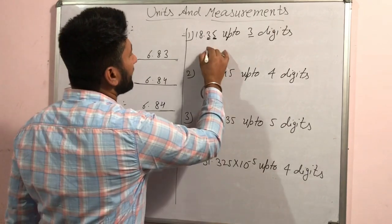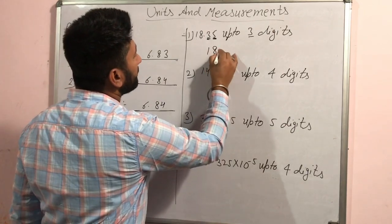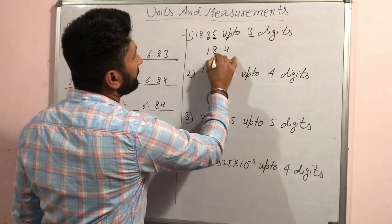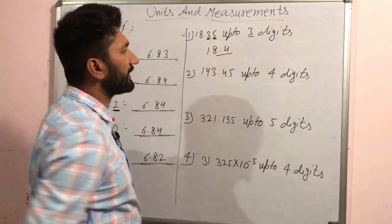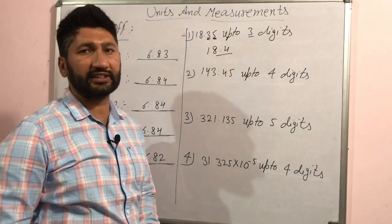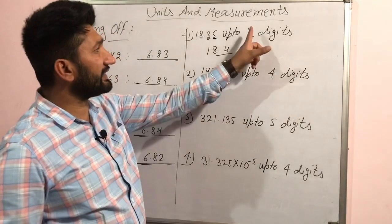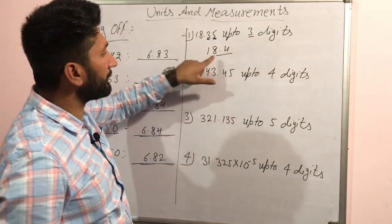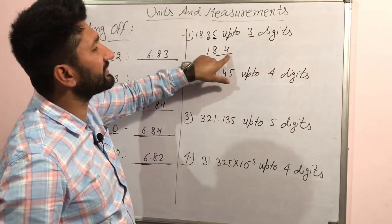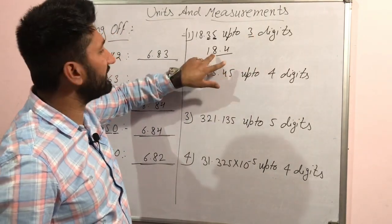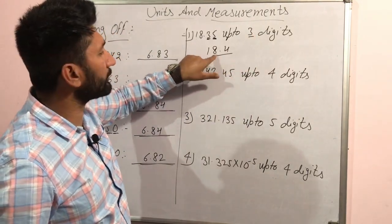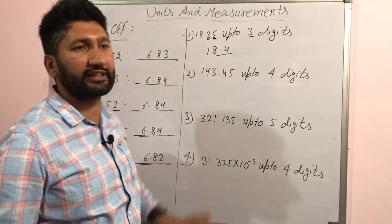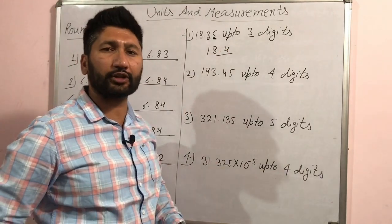So this answer is 18.4. Round off — the third digit. That's one, two, three digits — this is how many digits. So it is rounded off to three digits. Okay? Next example: 143.45 — round off up to four digits. One, two, three, four — four digits round off.